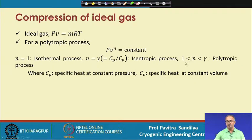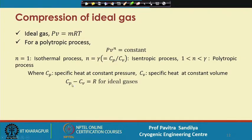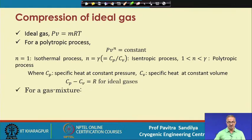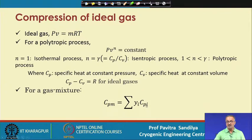If n is between unity and gamma, we have a polytropic process, since Cp is always greater than Cv, gamma will always be more than 1. For ideal gases, the difference between specific heat at constant pressure and constant volume equals R. For a gas mixture, we apply a mixing rule to find the average specific heat, which is the summation of the product of the mole fraction and the individual specific heat of each component.